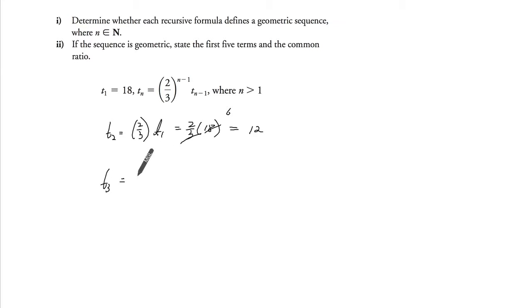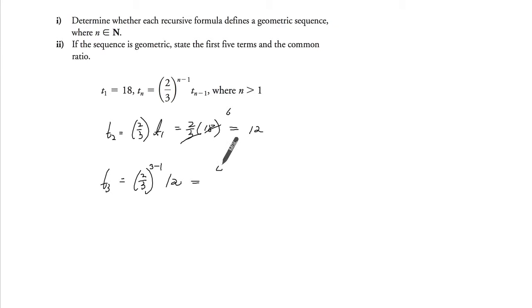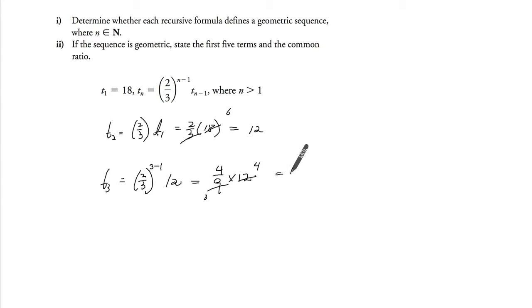t3: again 2/3, this time it's to the power of 3 minus 1, times by 12. That's 4/9 times by 12. Reduce the top and bottom by 3, and you get 16/3.